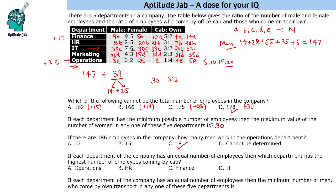If each department of the company has an equal number of employees, then which department has the highest number of employees coming by cab? In this question, since each department has equal number of employees, we just use the ratio and see which has the highest ratio. If all of them have the same number, it does not matter whether the number is 100, 200 or 500. We just have to see what is the highest ratio by cab. Cab ratio 1 — this is 5 ratio 2 which is 71 percent, 3 ratio 1 is 75 percent, 60 percent, 40 percent and 25 percent, 20 percent, one fifth. So the highest ratio obviously is in the HR department.